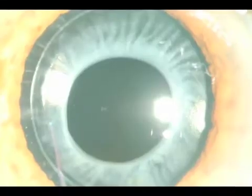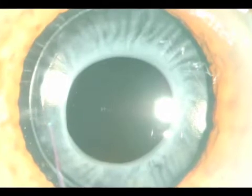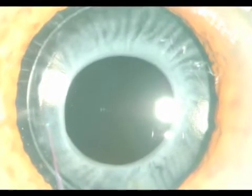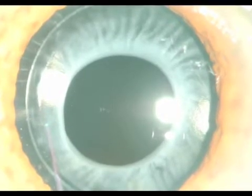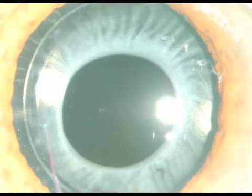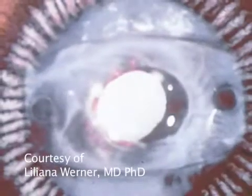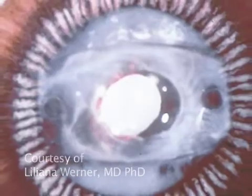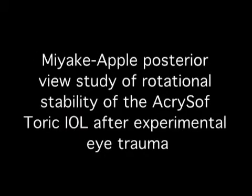The most frequent cause of IOL rotation following uncomplicated cataract surgery is capsular bag shrinkage due to fibrosis. This usually occurs within the first three months after implantation. Another potential source of IOL rotation is ocular trauma.